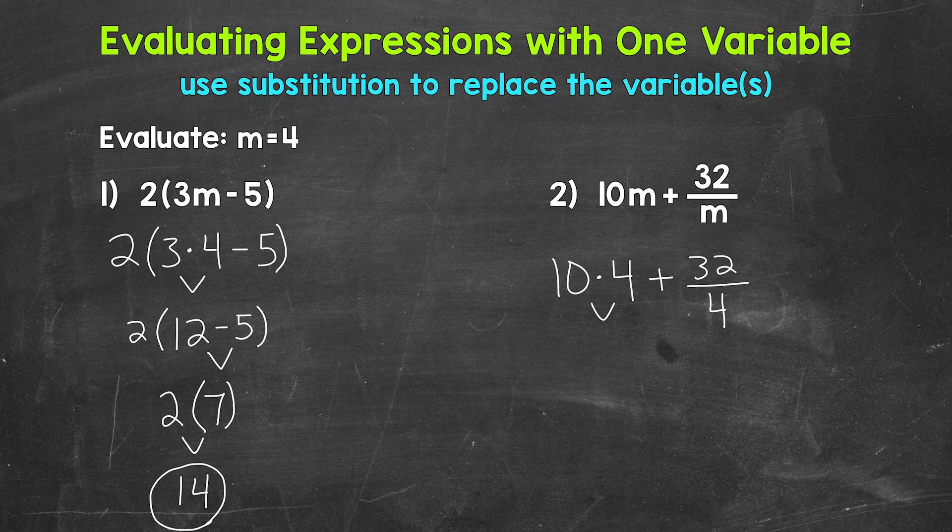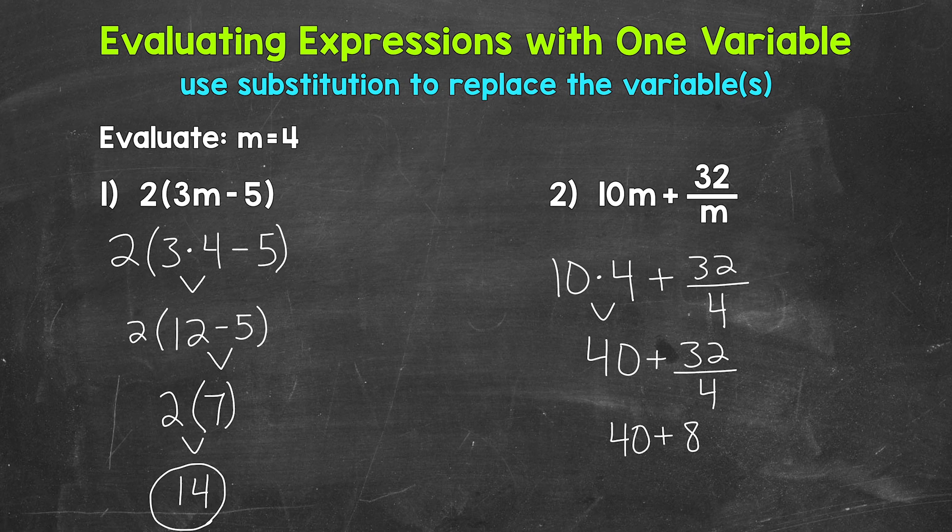10 times 4 is 40. Bring down everything we did not use, so the addition sign, and then the 32 divided by 4. So now we have addition and division. Division comes before addition. 32 divided by 4 equals 8. Bring down the addition sign and the 40. We end with 40 plus 8. 40 plus 8 equals 48.